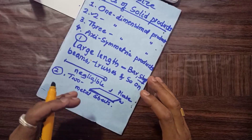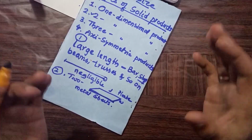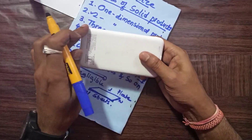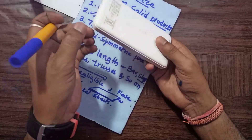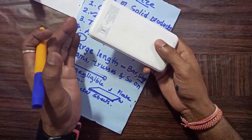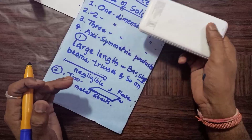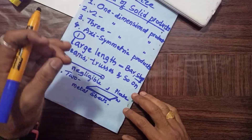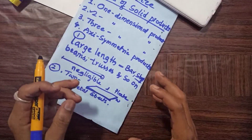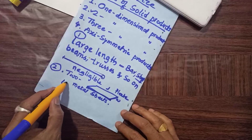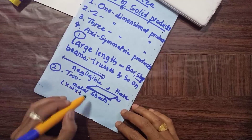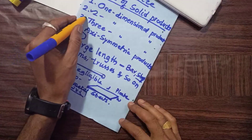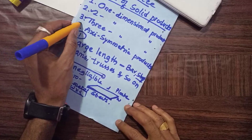Now coming to three-dimensional products: for three-dimensional products, all three dimensions are considerably large. The length, width, and thickness are all significant. When all three dimensions are considered, that product is called a three-dimensional product.